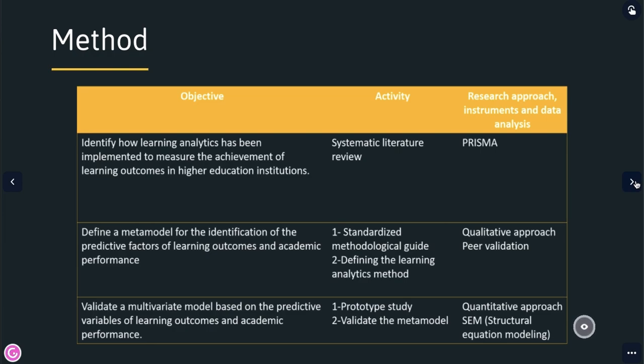The third goal is to validate a multivariate model based on the predictive variables of learning outcomes and academic performance. In order to achieve this purpose, we will develop two activities.